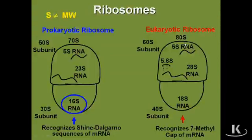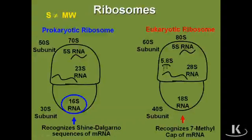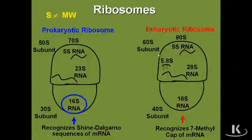Moving to the eukaryotic ribosome, the large 60S ribosomal subunit is subdivided into a 5S, a 28S, and a 5.8S ribosomal RNA species. Again, I wouldn't spend too much time on all these RNA species. The one thing to remember is that all ribosomal RNA is made by RNA polymerase I, with the exception of 5S ribosomal RNA, which is made by RNA polymerase III.